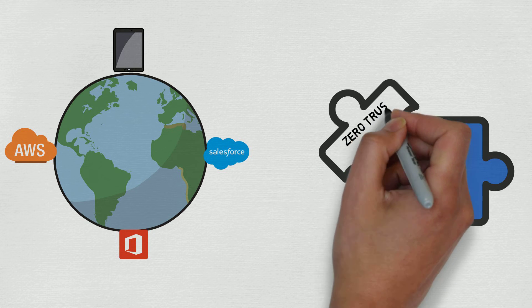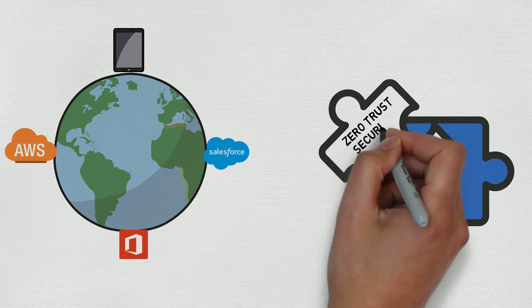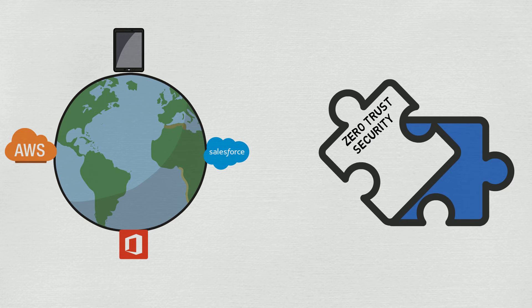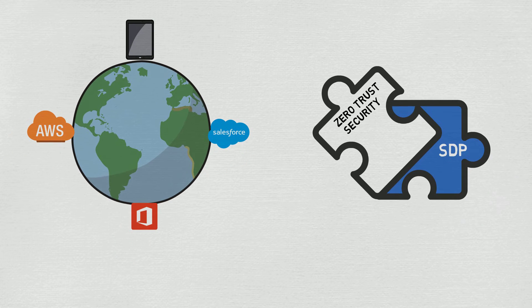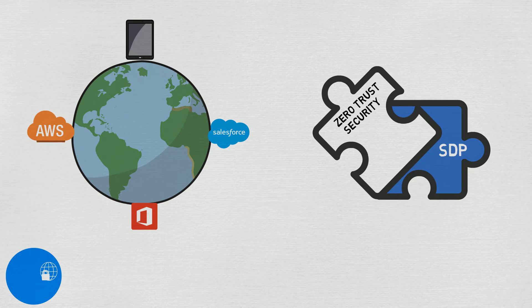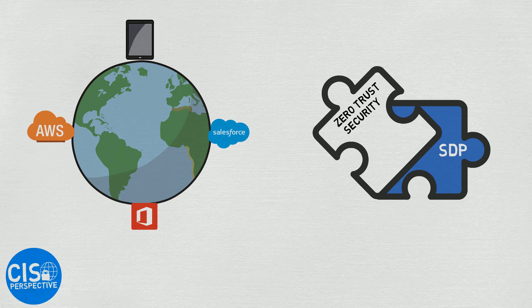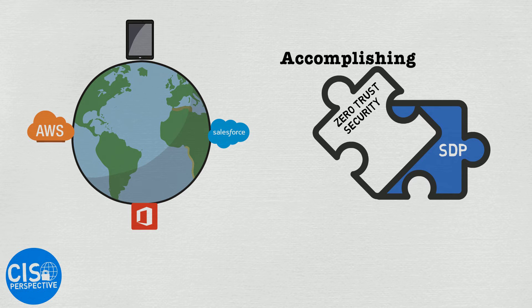Zero Trust Security is an architecture for today's networks. New technologies like Software Defined Perimeter have finally brought the concept into reality. I'm Andy with the CISO Perspective, and today we're going to look at accomplishing Zero Trust Security using SDP.